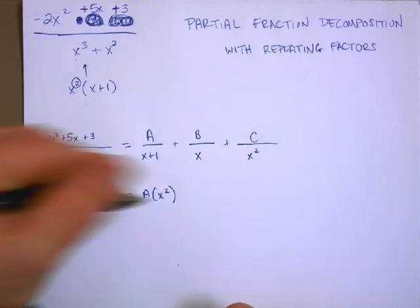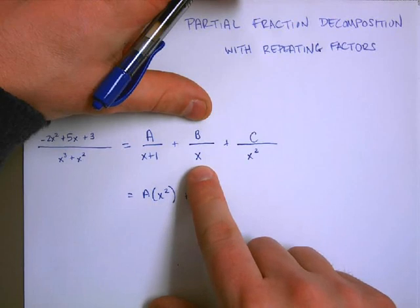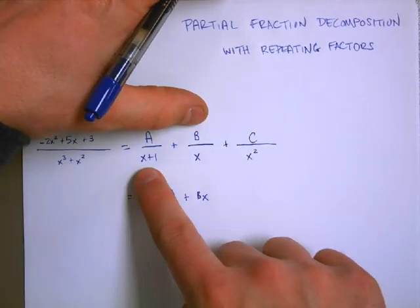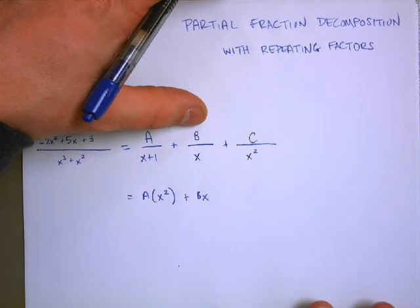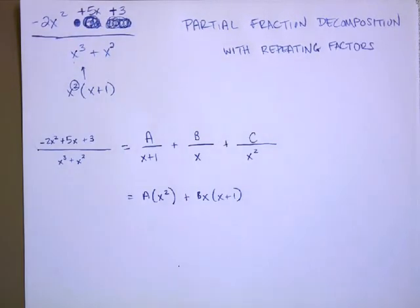I see here that my b is missing not only a power of x, so I need to multiply it by one more x, but I also am missing the x plus 1 term over here. So I need to take it times both of those fractions, or both of those denominators.